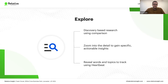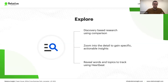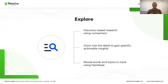For example, you may have created a comparison in Explore looking at how Americans and Brits differ when talking about travel. Your comparison might have revealed that Brits are more likely to talk about beach vacations, whereas Americans are more likely to talk about cruise vacations. You then group the related words and topics into themes that you can track across the broader public discourse around travel.